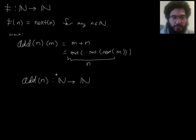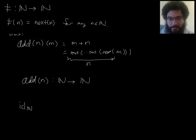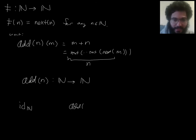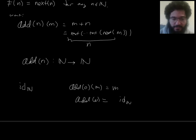We already have a function that nexts something once — that's the next function. We have a function that nexts something zero times — that's the identity function. To apply zero nexts means to apply none of them, so m goes in and m comes out. So add zero should work such that when you put in m you get m back out — add zero should be the identity function. This is what we want, though it's not quite a definition yet.